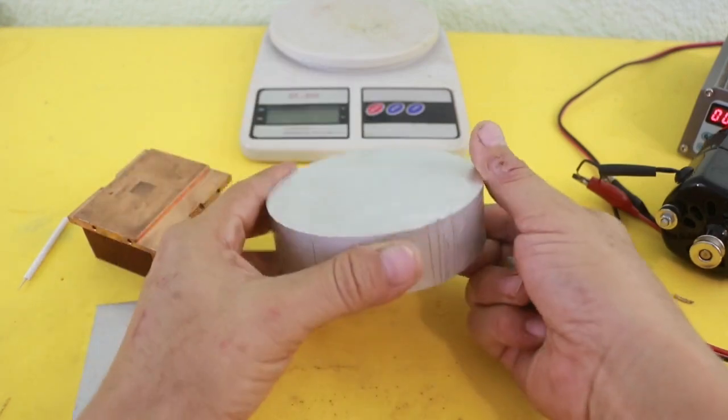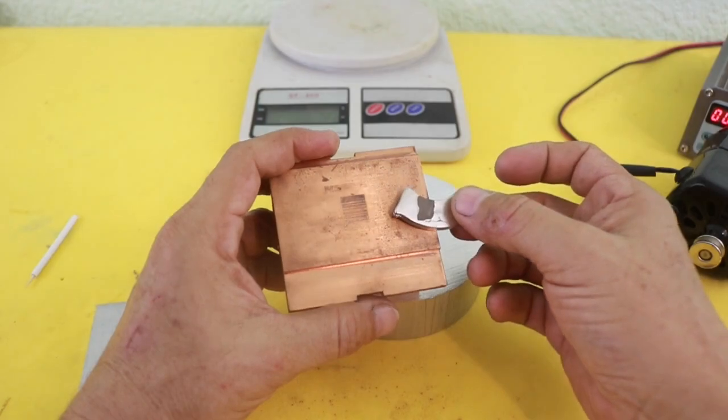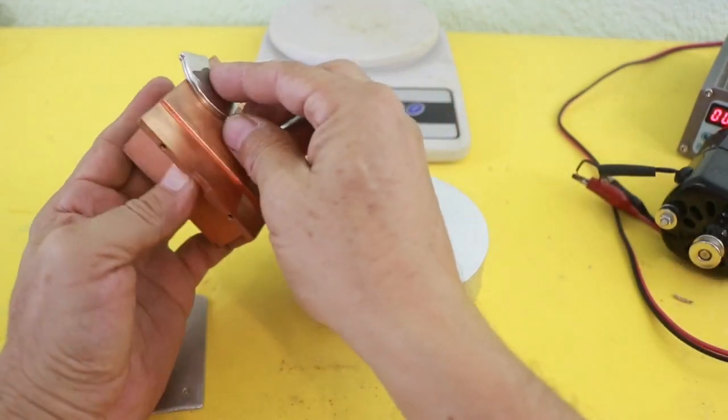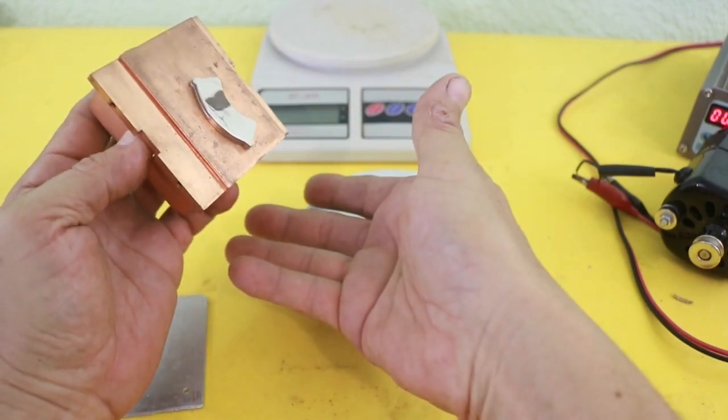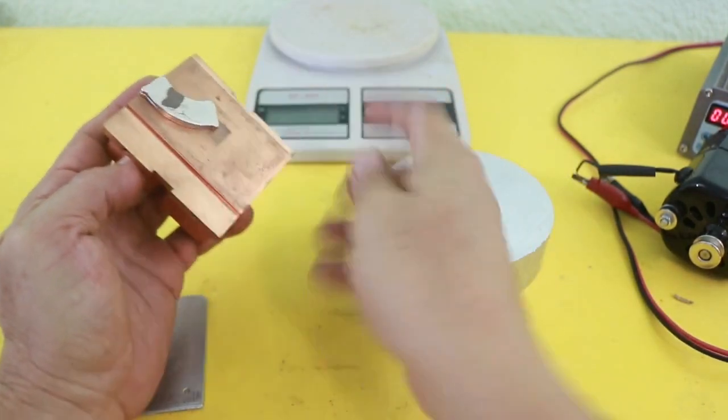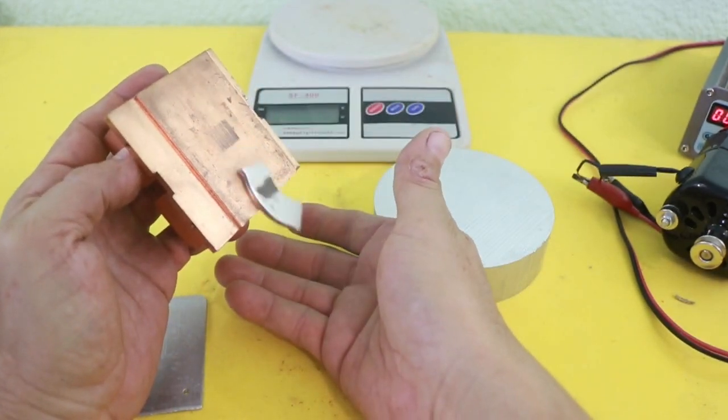The same happens with copper, which is also not magnetic but it is a conductor, and also a current is induced by the field of the magnet, and the field created in the copper opposes the changes in the field of the magnet.